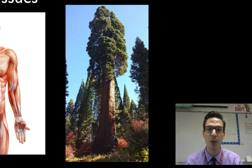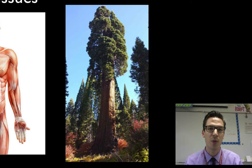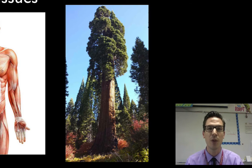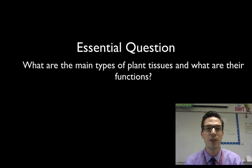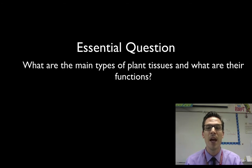Here's a picture of a sequoia tree. Sequoia trees are massive — they can get to be hundreds and hundreds of feet high, but they still need to be able to survive. They need to transport things around and carry out life functions, and it's all thanks to cells working together forming these things called tissues. Our essential question is: what are the main types of plant tissues? We're going to cover four total in this video and discuss what are their functions.